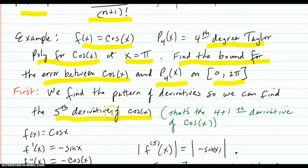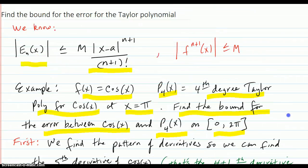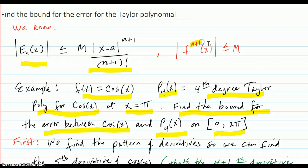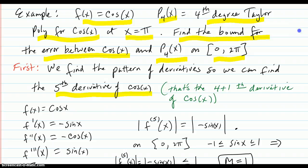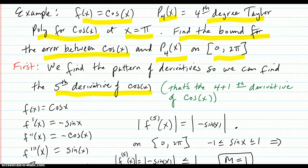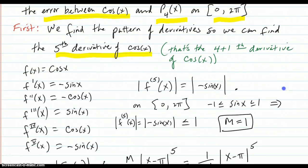We need the fifth because P4 was the fourth Taylor polynomial, and we want to find up to the n plus 1. So we need to go all the way to the fifth derivative.